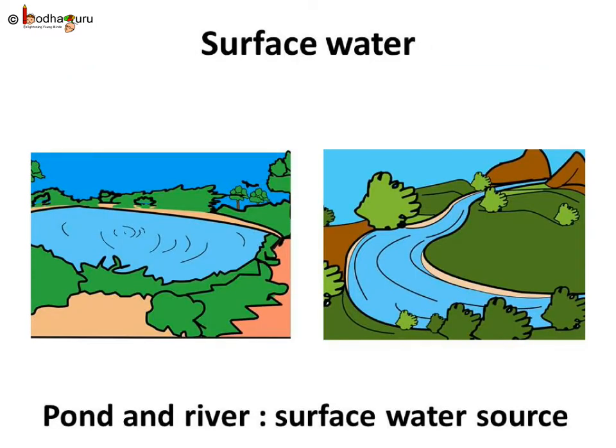In many places people get drinking water from ponds, lakes or rivers. Most of the time that water is purified in a water treatment plant and then sent to our houses. But still in many places, specifically in rural areas, people rely on water of pond, lake, etc. directly.